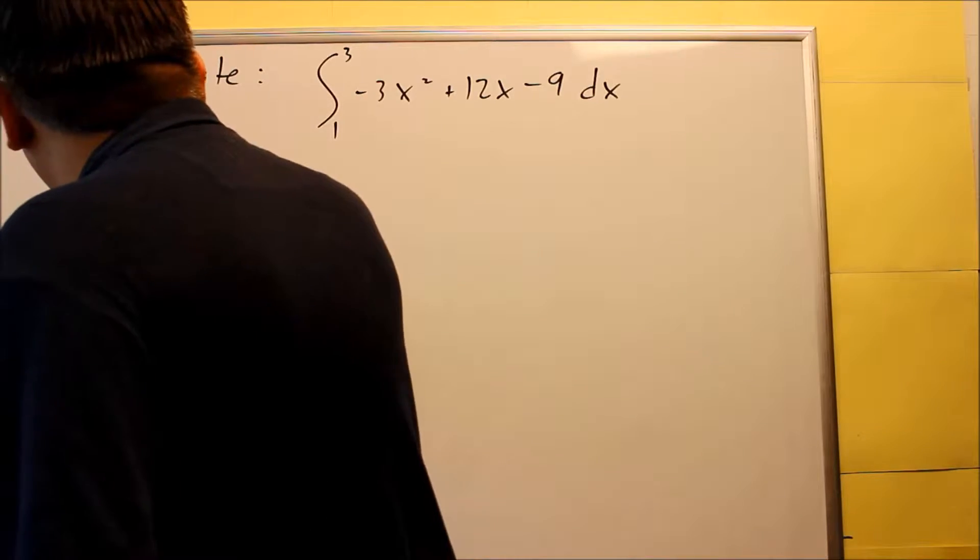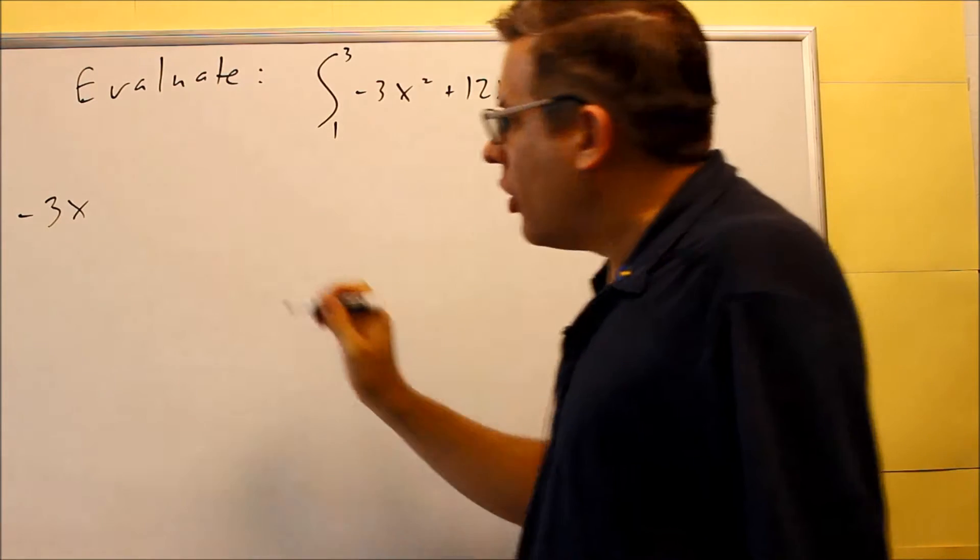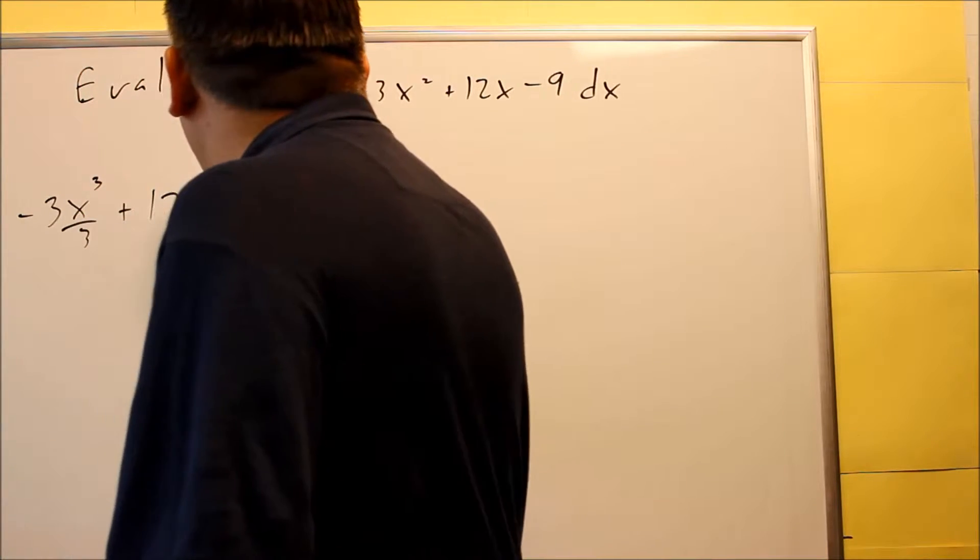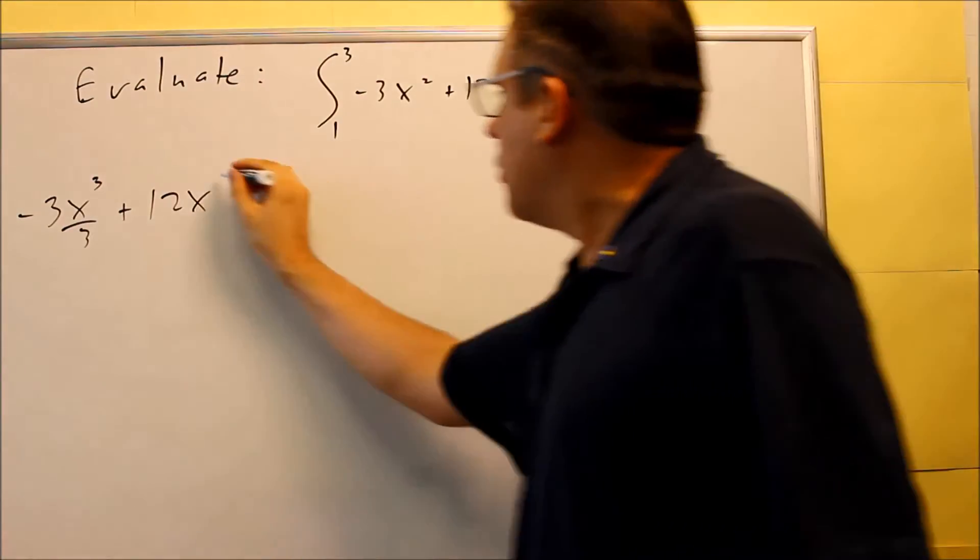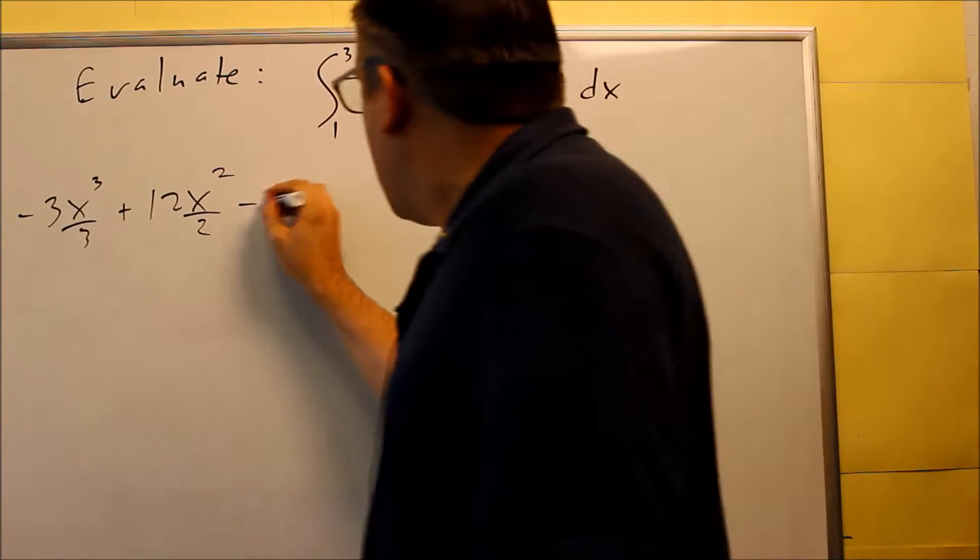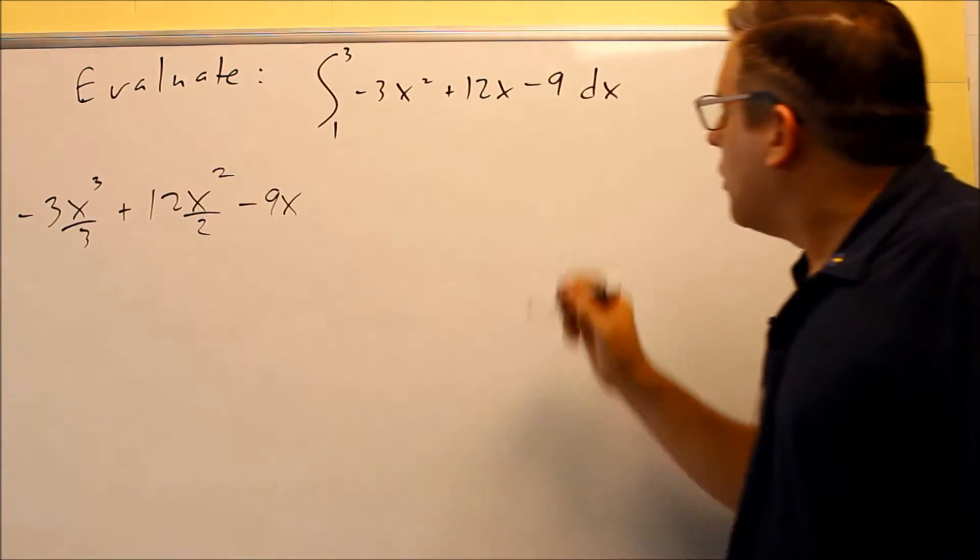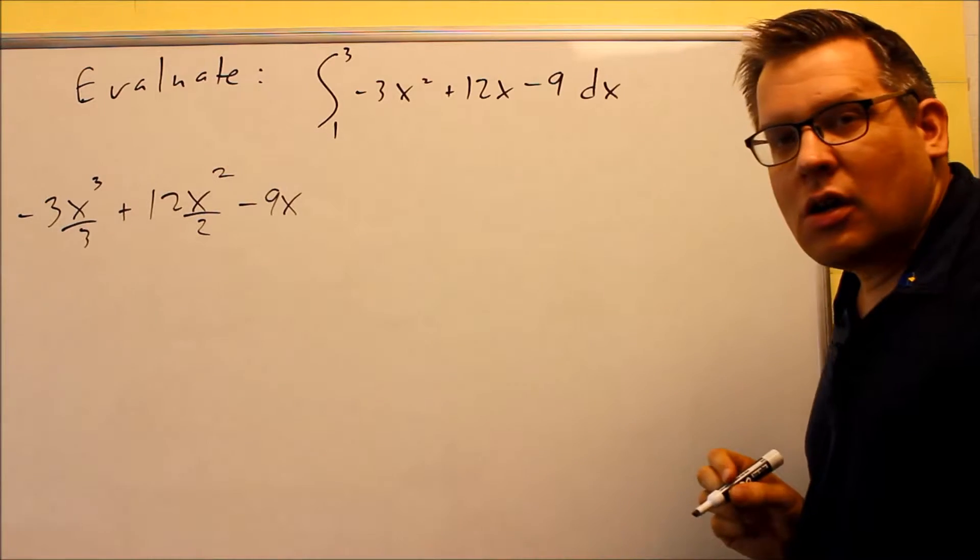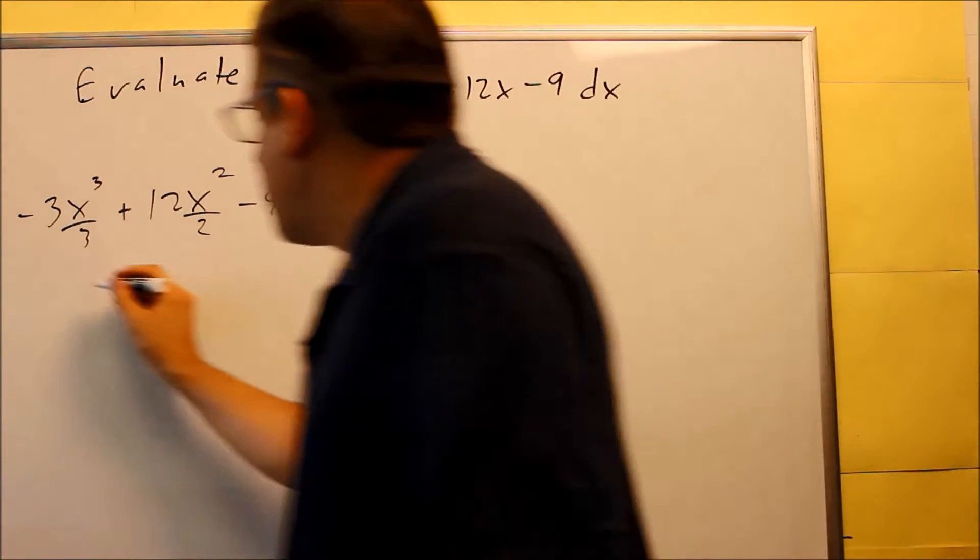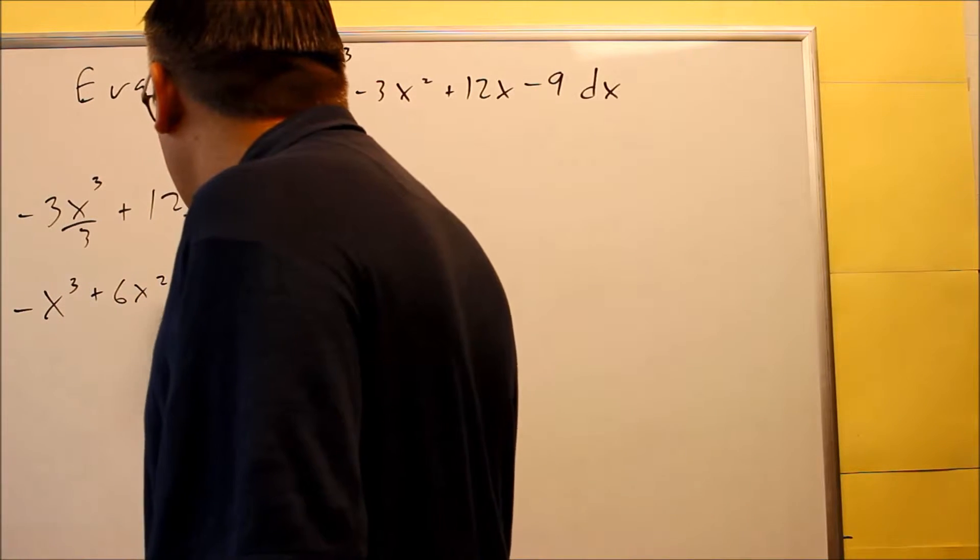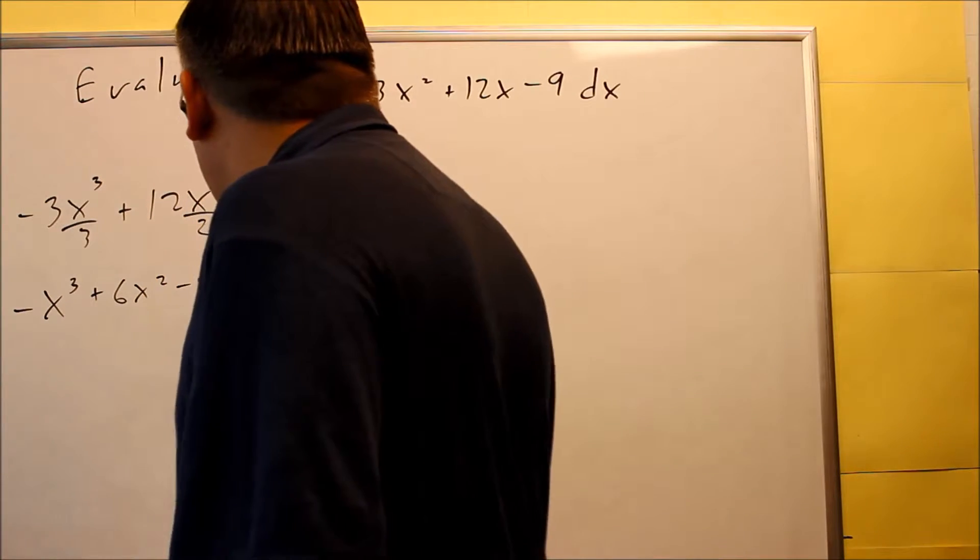So for here we have -3x raised the power by 1 divided by the new power. Got to do that for the next one as well, for the 12x, raised it by 1 divided by the new power. And then the 9, that's x to the 0 power, that means you'll get an x after it. We're going to do a little simplifying step. So we get -x³ + 6x² - 9x.